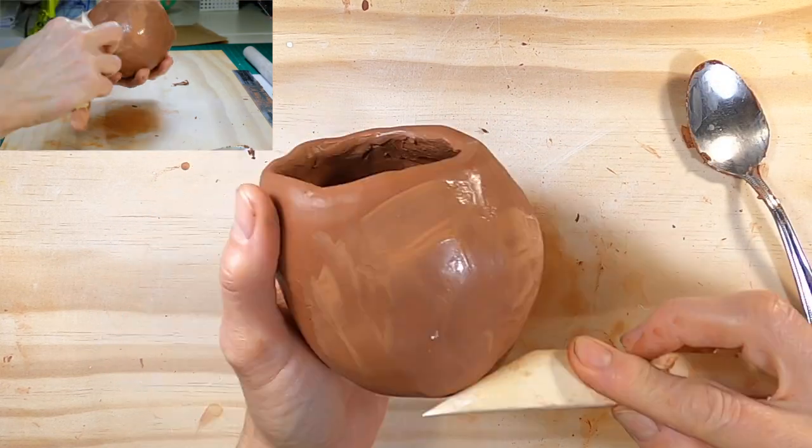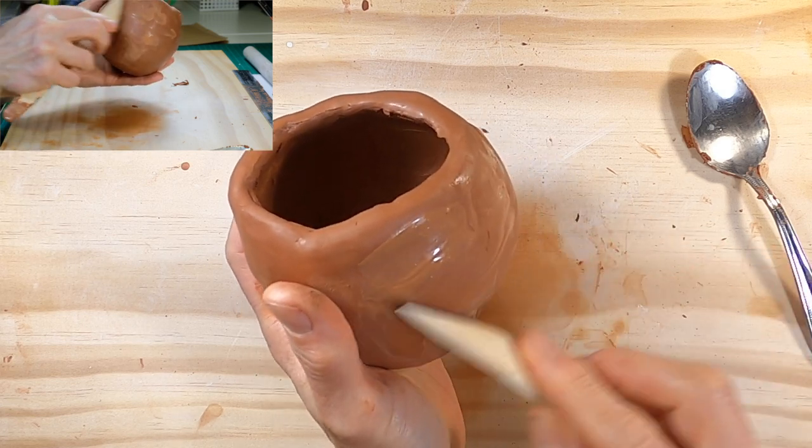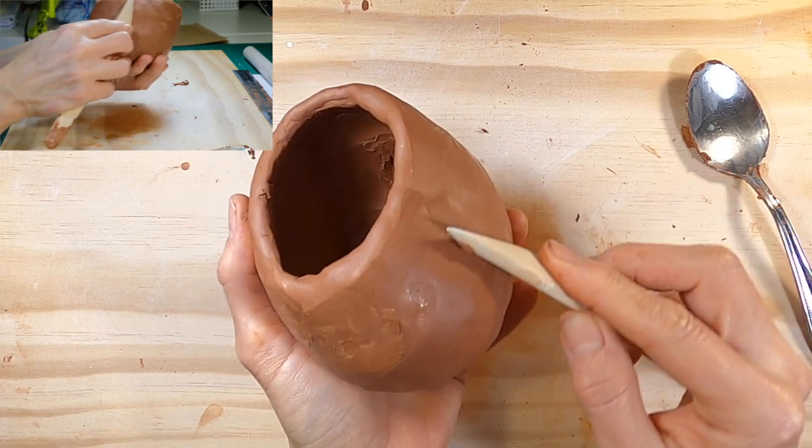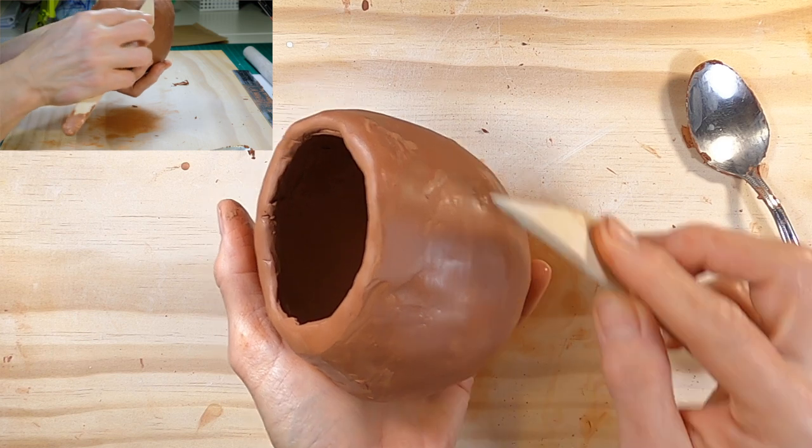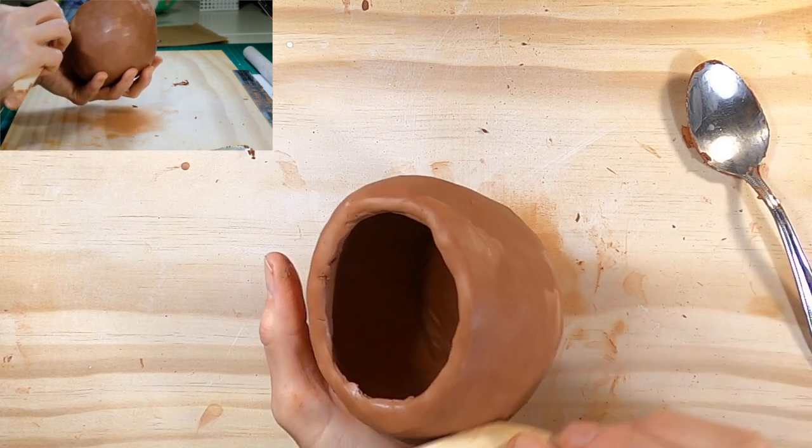Here I'm using some slurry to help smooth the surface. I made the slurry by mashing a little bit of the same clay into some water with a fork. Again, be careful the clay doesn't become too wet. Use your hands and tools to keep working all over the surface of the clay.